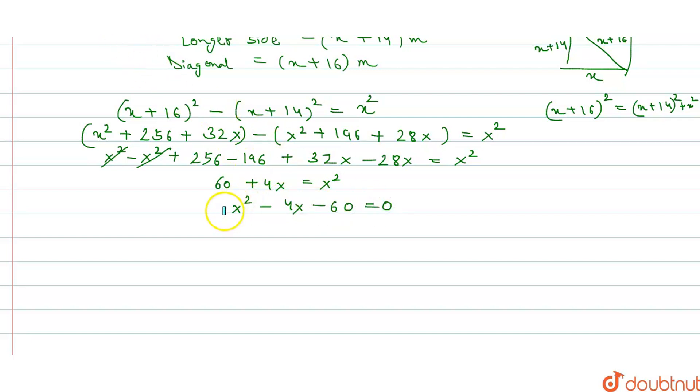Now our quadratic equation is formed so we can factorize it. So here we can take x common, x minus x, here we can take 6 common. So we have a factor x minus 10 and the other factor is x plus 6 which equals to 0.